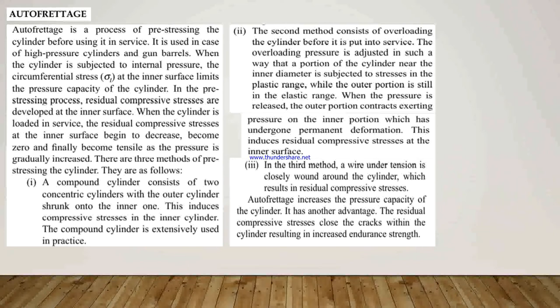Now we see autofrettage. Autofrettage is the process of pre-stressing the cylinder before using it in service. It is used in high pressure cylinders and gun barrels. When the cylinder is subjected to internal pressure, the circumferential or tangential stress sigma_T at the inner surface limits the pressure capacity. In the pre-stressing process, residual compressive stresses are developed at the inner surface. When the cylinder is loaded in service, the residual compressive stresses begin to decrease, become zero, and finally become tensile as pressure is gradually increased. There are three methods for pre-stressing of the cylinder.